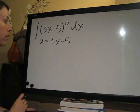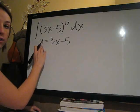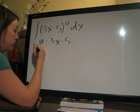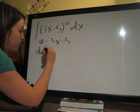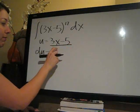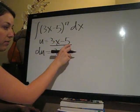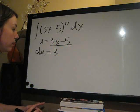So what we're going to do is take the derivative of u, which is du. We're taking the derivative of this part right here. So the derivative of this is 3 from 3x, and then 5 as a constant goes away.